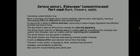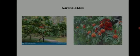Next, Saraca asoka belongs to the family Fabaceae, sub-family Caesalpiniaceae. The parts used are the bark, flowers, and seeds. This plant is commonly called the ashoka tree. The bark is strongly astringent and a uterine sedative — it is used as a uterine tonic with stimulating effect on endometrial and ovarian tissue. Its decoction is given in uterine disorders especially menorrhagia, dysmenorrhea (painful periods), and leucorrhea (white thick discharge from female reproductive organs).